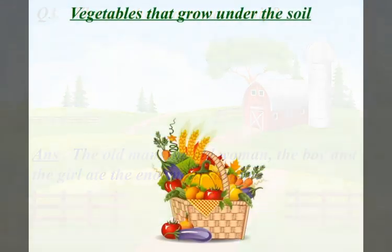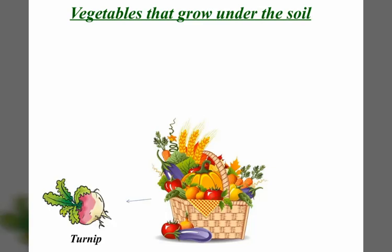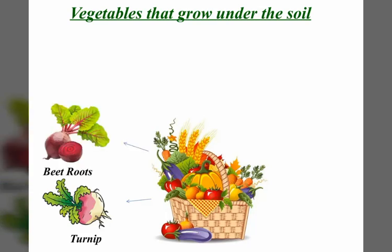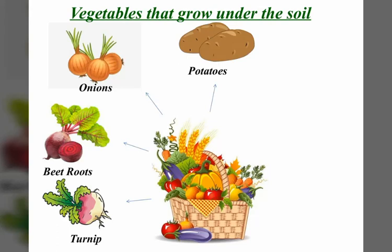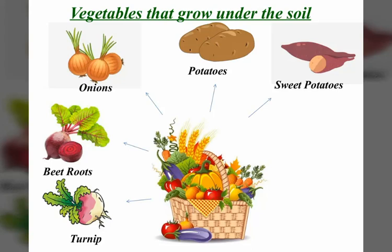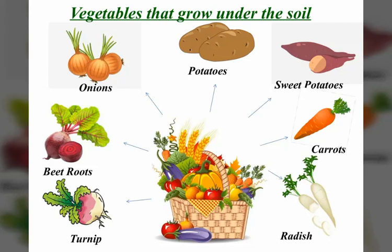Dear kids, do you know some fruits and vegetables grow under the soil? Isn't it amazing? Come, let's find out these types of vegetables. Yes — turnip, beetroots, onions, and your favorite, potatoes, sweet potatoes, carrots, radish, garlic, ginger, and many more.